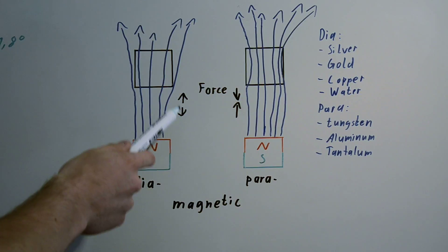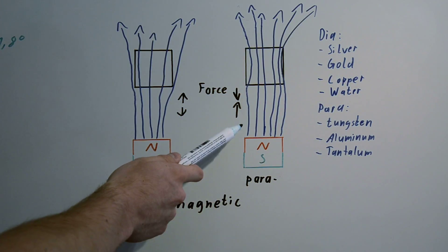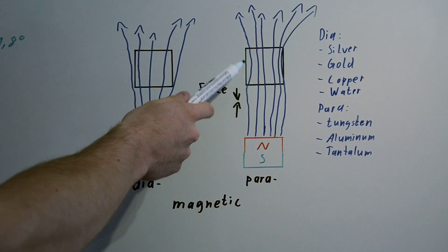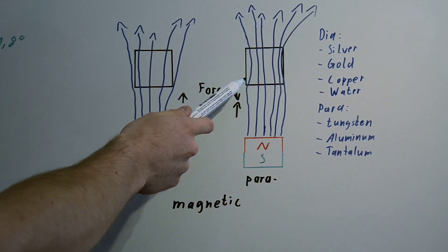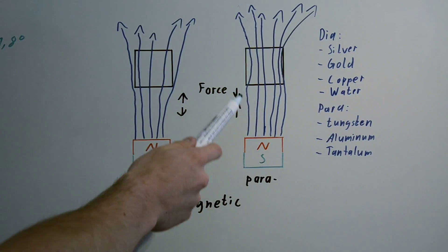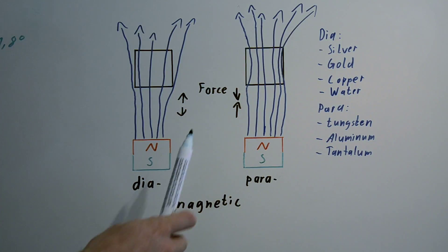So it gets repelled from the magnet. In a paramagnetic substance, the magnetic field gets focused and concentrated in the substance. So the field in it is a little bit stronger than outside of it, so it gets attracted to the magnet.